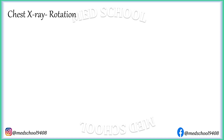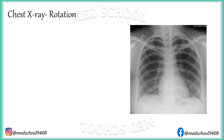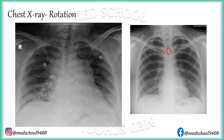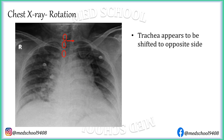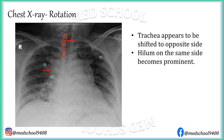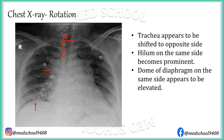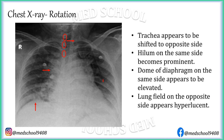Rotation of an X-ray can be judged from the position of the spinous process with respect to the medial border of the clavicles. If the spinous processes are equidistant from the medial border of the clavicle, there is no rotation. If the spinous processes are deviated from midline, it indicates rotation. Rotation can produce false changes: the trachea appears shifted to the opposite side, the hilum on the same side becomes prominent, the dome of the diaphragm on the same side appears elevated, and the lung field on the opposite side appears hyperlucent.